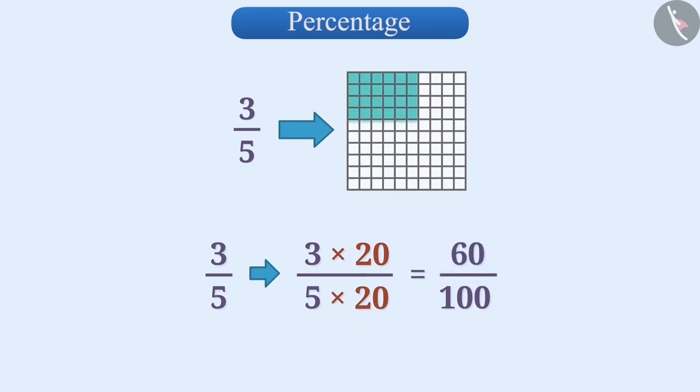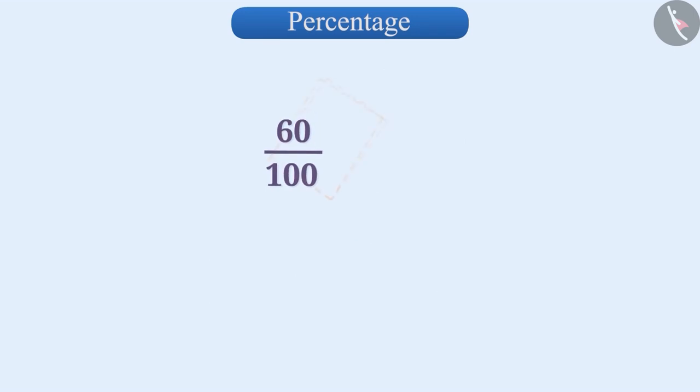Now, we will shade 60 parts out of 100 equal parts. In this way, we have represented 3 by 5 in squares of 100 equal parts.